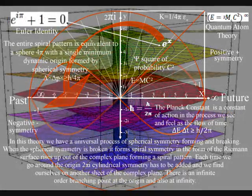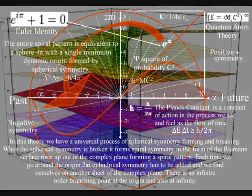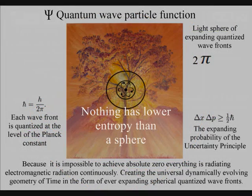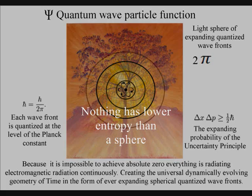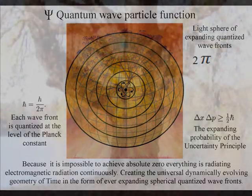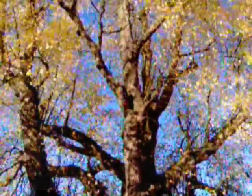This organization is formed by the quantum wave particle function, or probability function, having spherical symmetry. As the energy levels cascade down, it forms greater degrees of freedom for the disorganization of entropy that we have in the second law of thermodynamics.